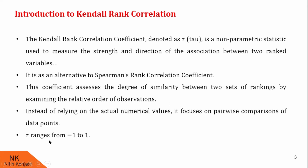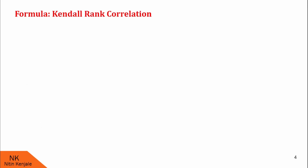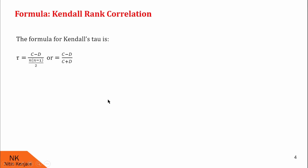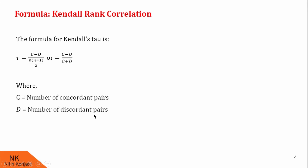Generally, tau ranges from minus 1 to 1. The formula for Kendall's rank correlation coefficient is given by (C minus D) upon n(n minus 1)/2, or (C minus D) upon (C plus D), where C stands for number of concordant pairs, D stands for number of discordant pairs, and n is the total number of observations.